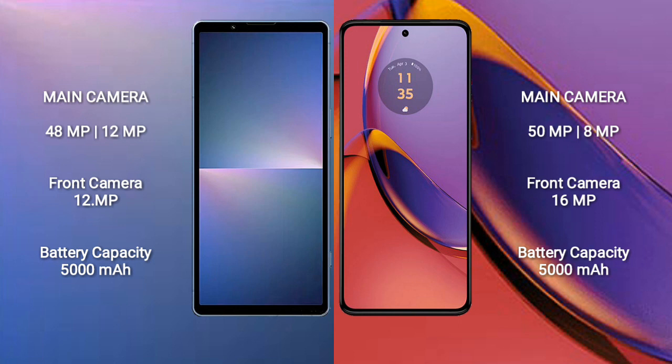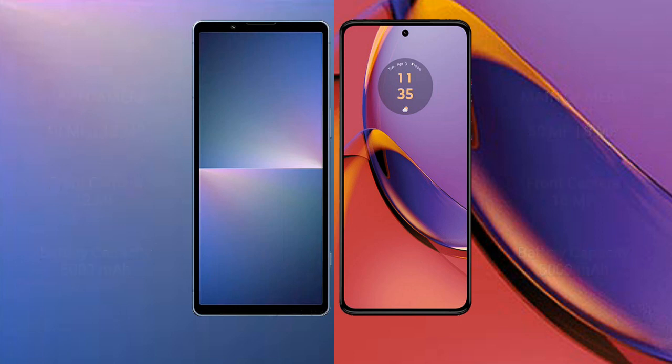Sony Xperia 5 Mark 5 has a rear dual-camera setup of 48MP plus 12MP and a front camera of 12MP. Motorola Moto G84 has a rear dual-camera setup of 50MP plus 8MP and a front camera of 16MP. Sony Xperia 5 Mark 5 has a 5000mAh battery with 25W fast charging, while Motorola Moto G84 has a 5000mAh battery with 30W fast charging support.